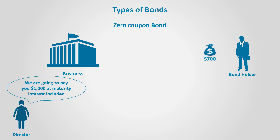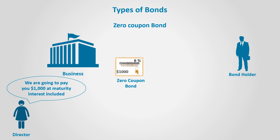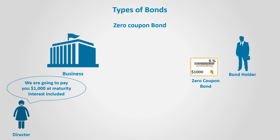Zero-coupon bonds do not pay interest during their life. Instead, they pay the accumulated interest together with the principal amount at maturity.